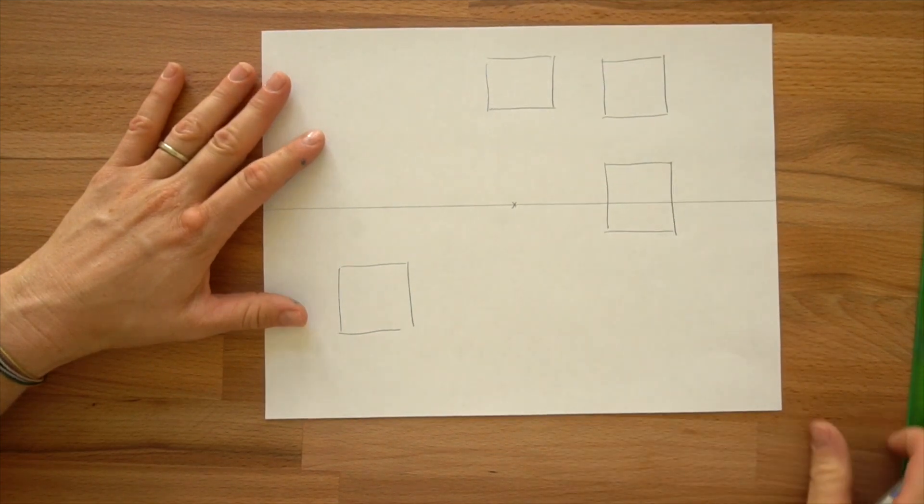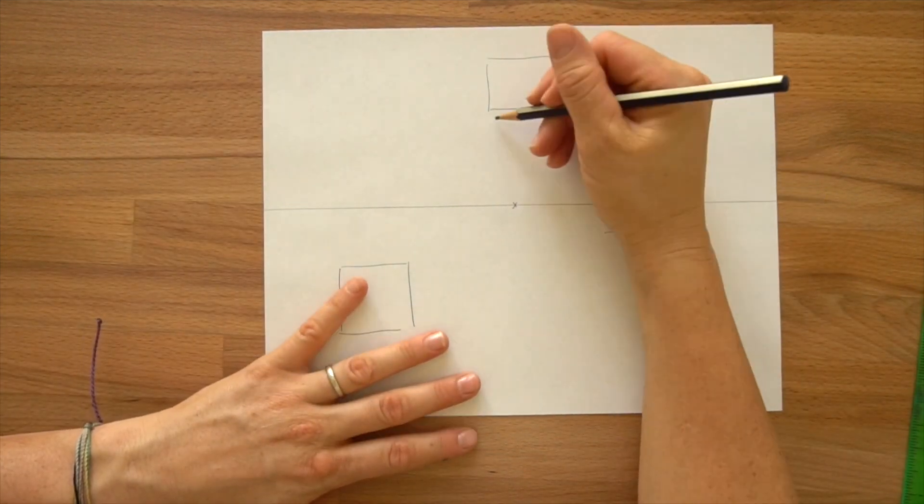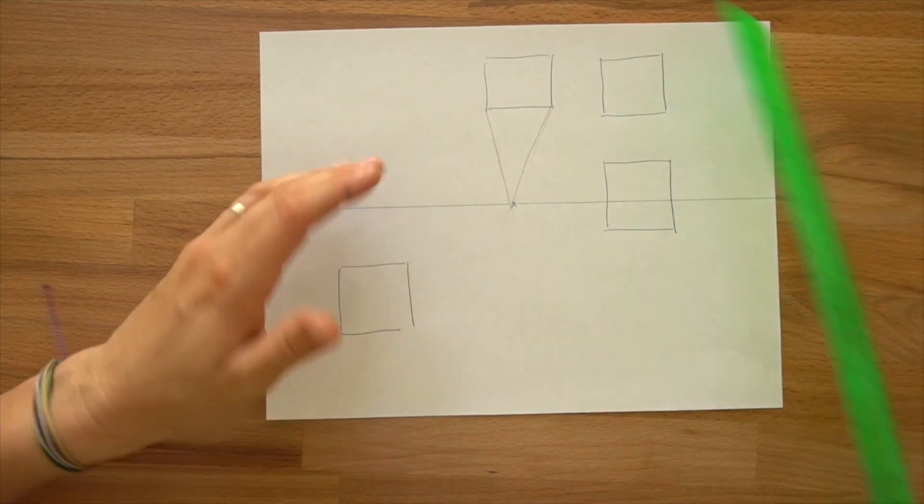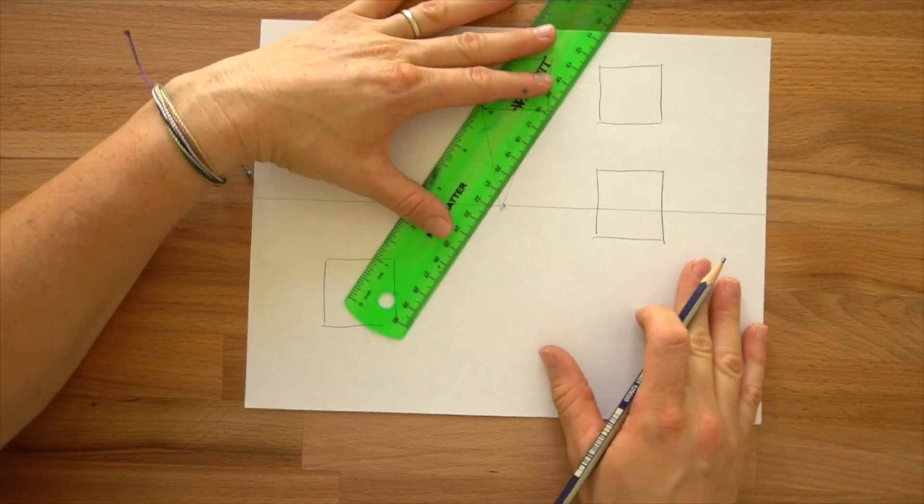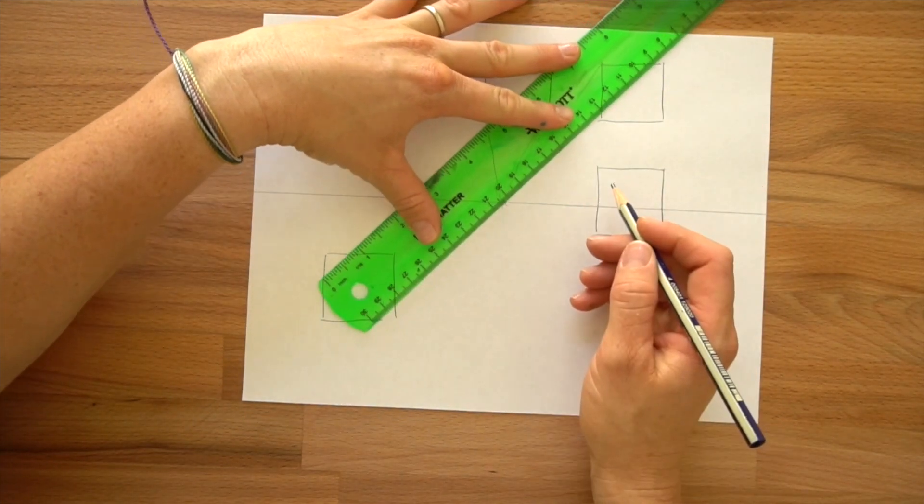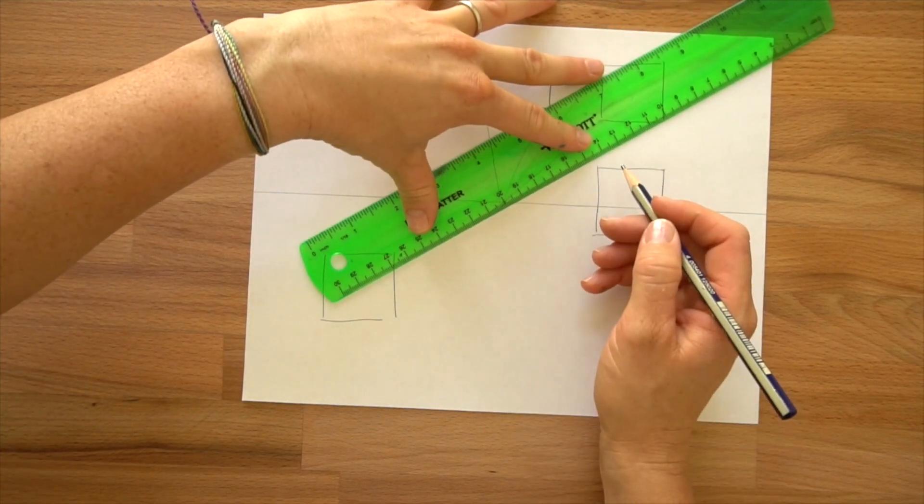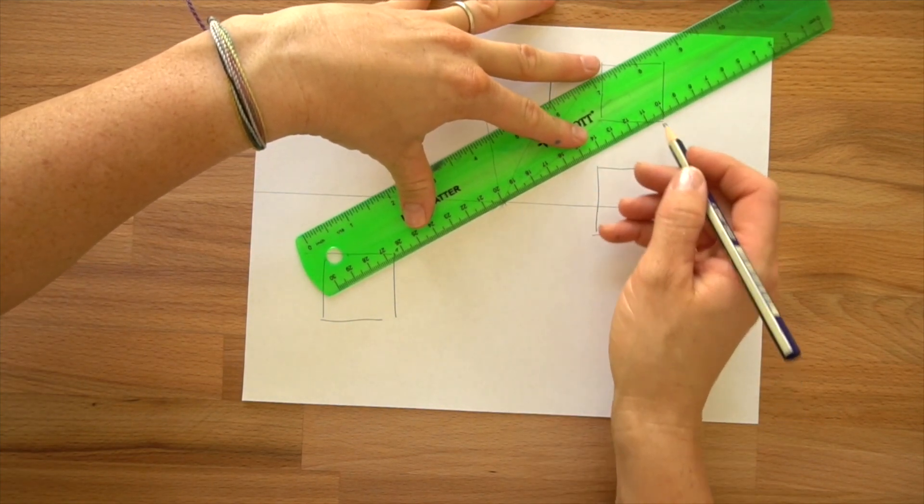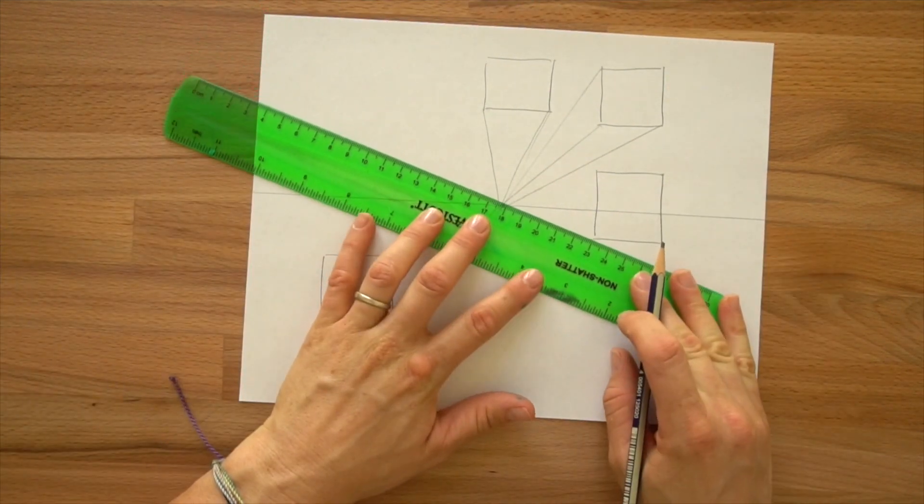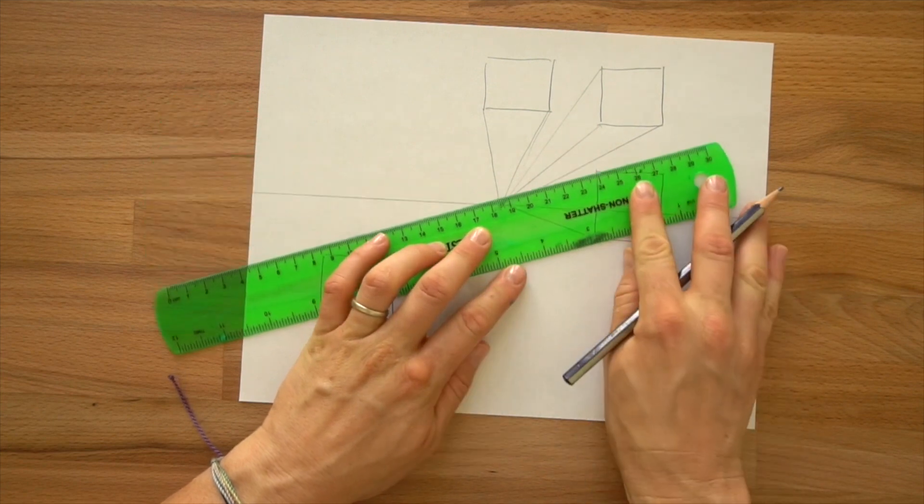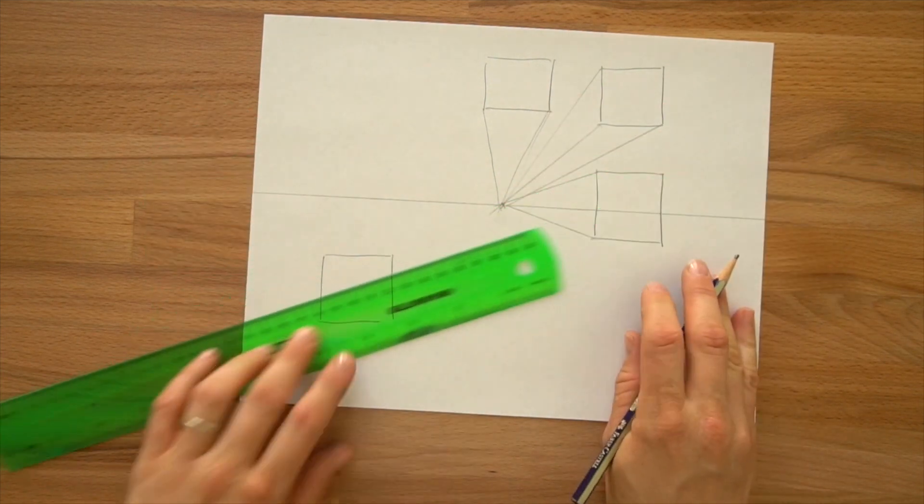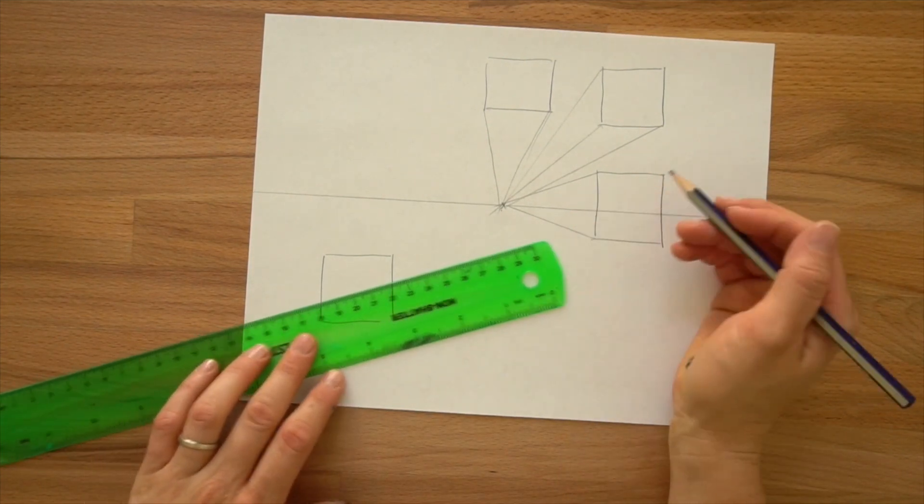Now you have your four boxes and you can either draw lines back through connecting all of the corners back to the vanishing point, or you can use your ruler. If you want it to look really precise, go ahead and draw a line from each one of those corners back to that vanishing point. They're cubes now, let's say they're solid, so we can't see through them.